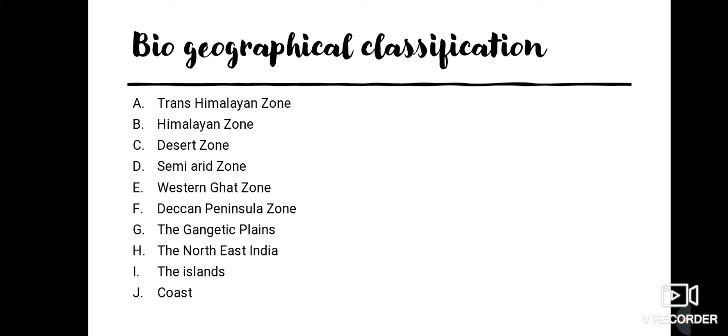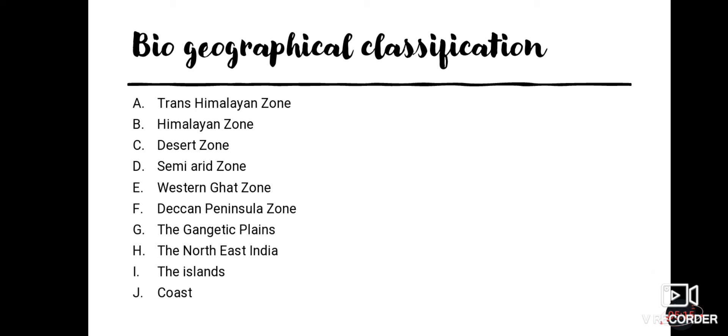Now we are moving on to the biogeographical classification of India. Our planet, or specifically India, is classified into different zones based on different characters. The first one is the trans-Himalayan zone, which is the richest wild community.